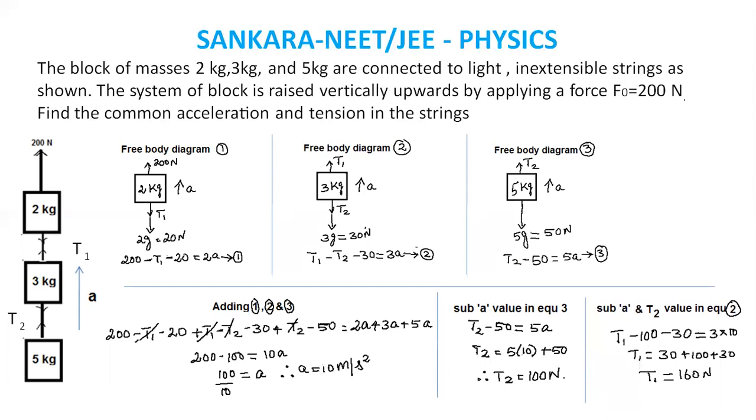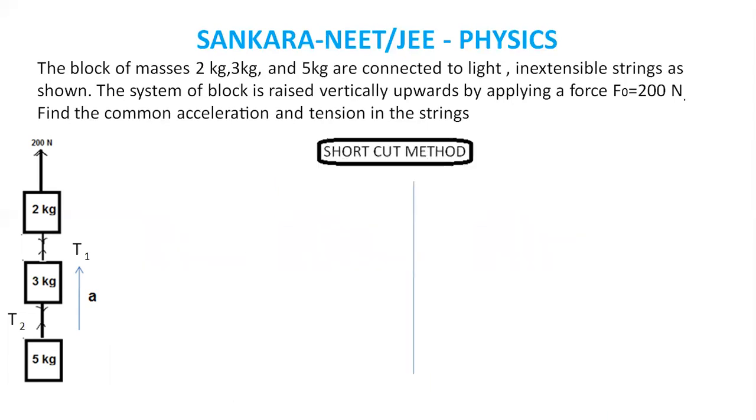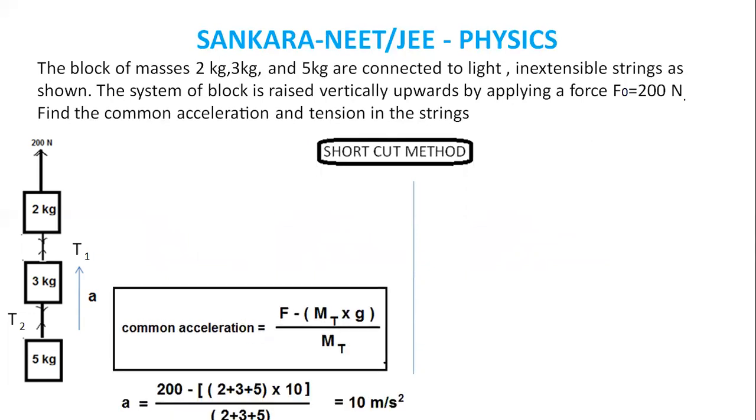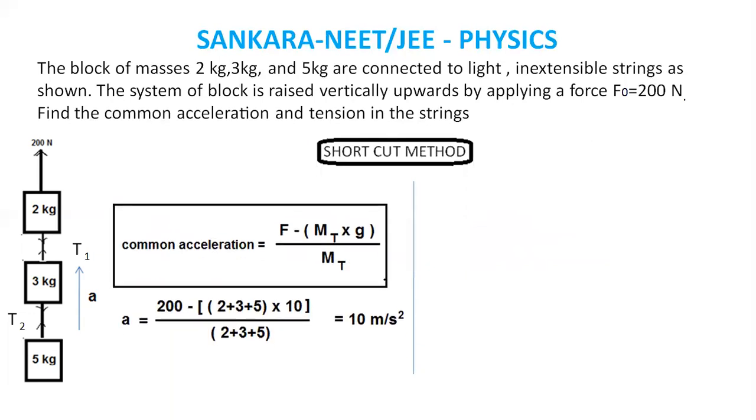This is the shortcut method. Common acceleration equals F minus M total times g divided by M total. So 200 minus 2 plus 3 plus 5 times 10, divided by 2 plus 3 plus 5, equals 10 meters per second squared.